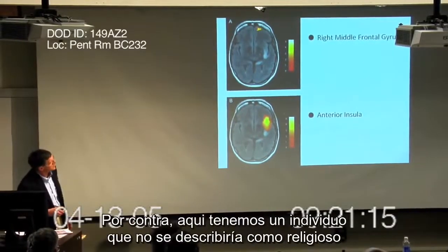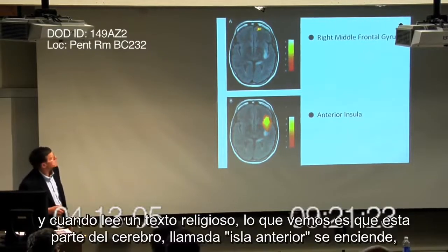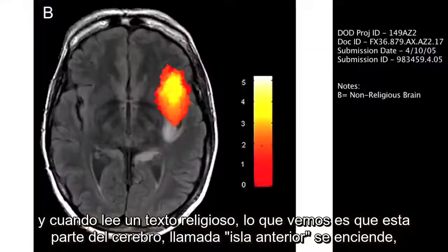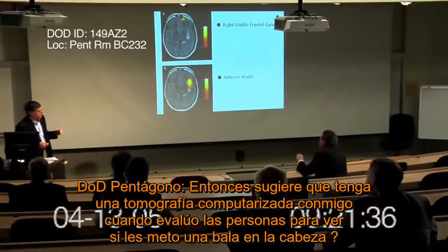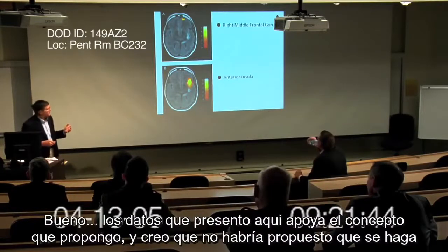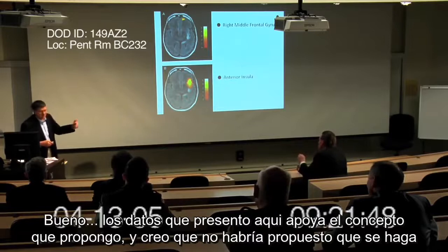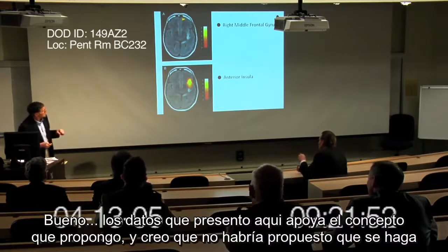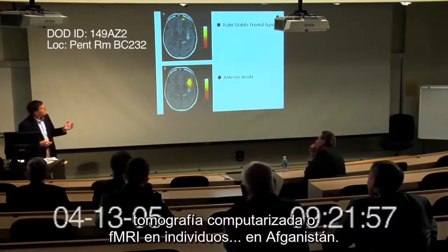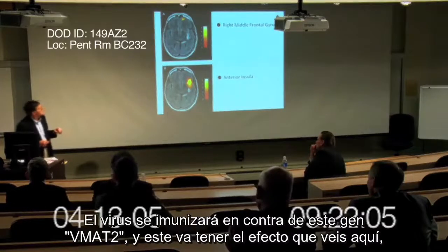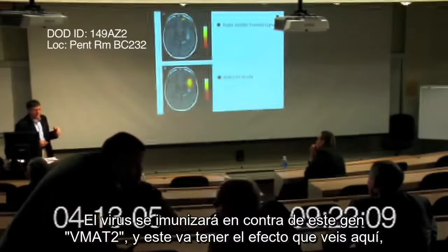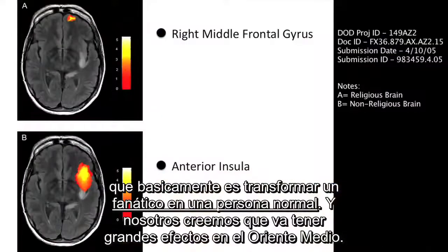It's a part of the brain that has to do with intents and beliefs and desires. In marked contrast, here's an individual who would not particularly self-describe as religious. When they're read a religious text, what you see is that this part of the brain, called the anterior insula, lights up. This is a part of the brain associated with disgust or displeasure on hearing something. So you're suggesting I take a CT scan when I'm evaluating people to determine whether I'm going to put a bullet in their head? The data I'm presenting here supports the concept we're proposing. We would not propose to do CT scans or fMRIs on individuals out in the hinterlands of Afghanistan. The virus would immunize against this VMAT2 gene, and that would essentially turn a fanatic into a normal person.